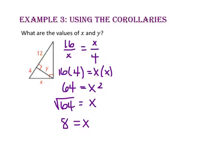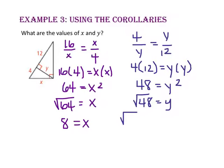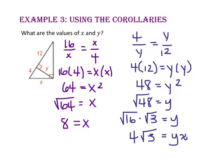Since Y is the altitude, we know that Y is the geometric mean of both segments of the hypotenuse, 4 and 12. Using cross products: 4 times 12 equals Y squared, so 48 equals Y squared. Taking the square root of both sides, Y equals the square root of 48, which simplifies to 4 times the square root of 3, or approximately 6.9.